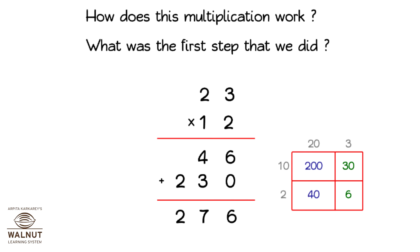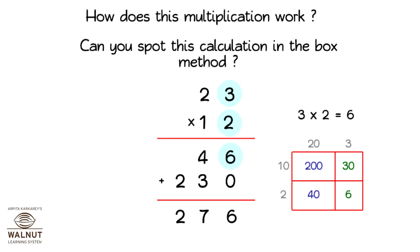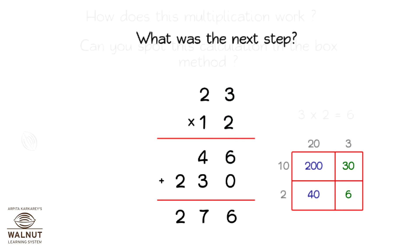What was the first step that we did? 3 into 2 is 6. Can you spot this calculation in the box method? What was the next step? 2 into 2 is 4.